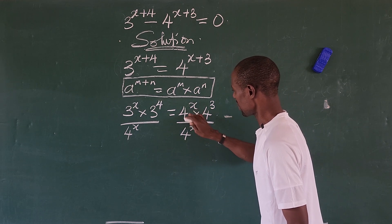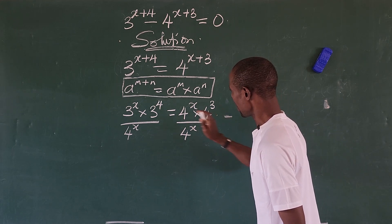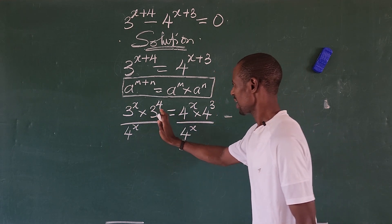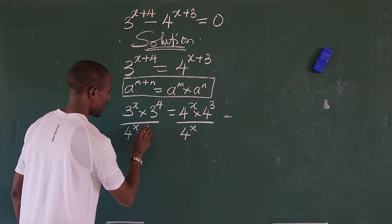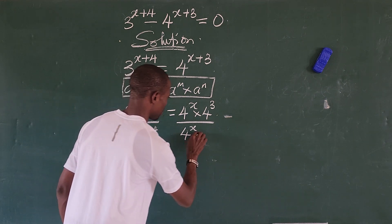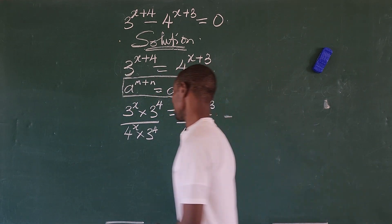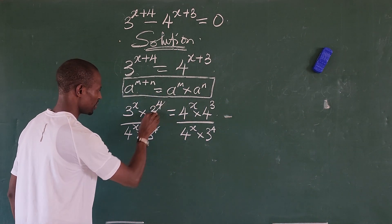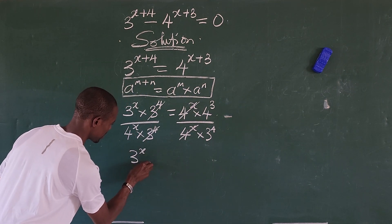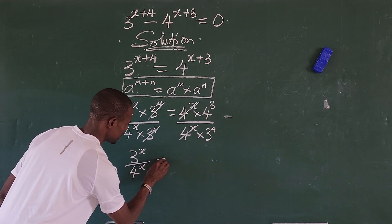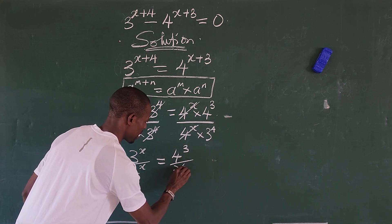Because we are dividing by 4 to the power of x, we equally divide through by 3 to the power of 4, so that the constant will be on the right-hand side. After cancellation, we are left with 3 to the power of x all over 4 to the power of x, equal to 4 to the power of 3 all over 3 to the power of 4.